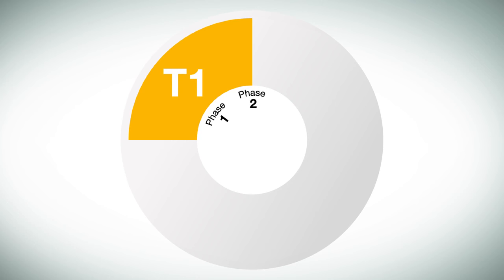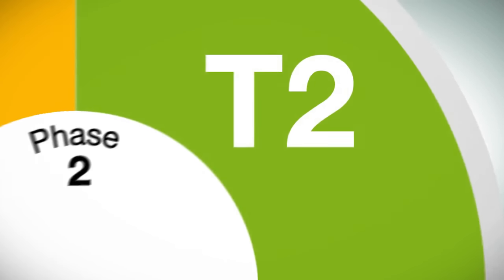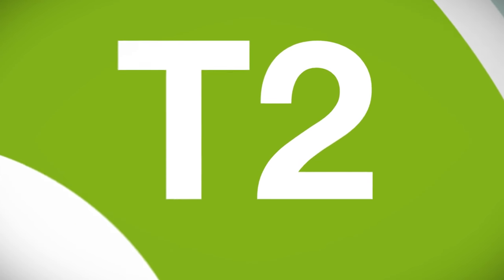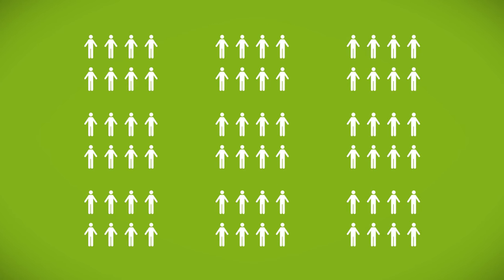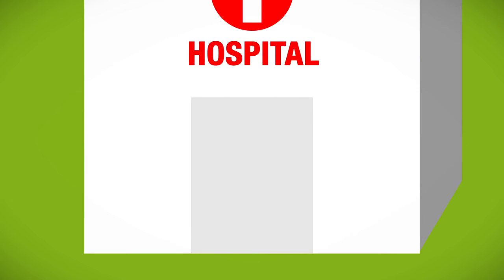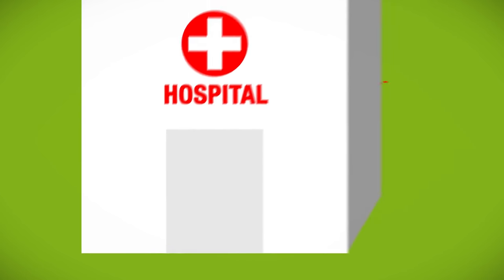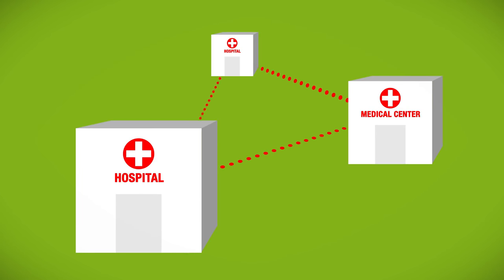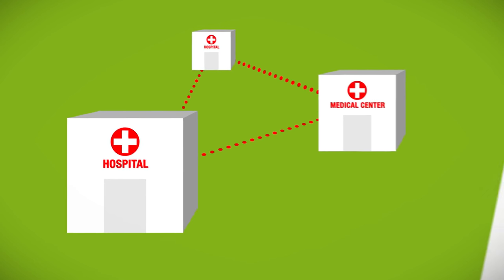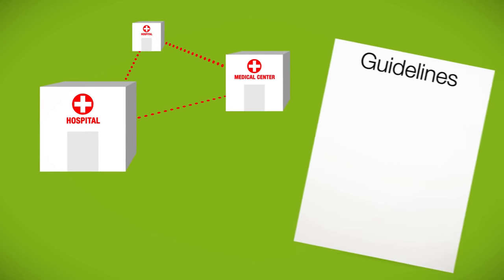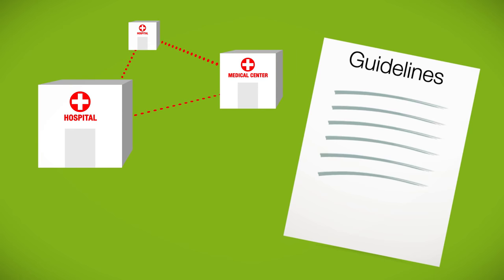To see if the drug is effective, T2 researchers give the new treatment to patients who have the disease researchers are interested in. T2 studies are bigger than T1, with hundreds of people at multiple medical centers receiving the new experimental treatment. These larger studies make up phase 2 and 3 clinical trials. The results from these studies help to establish guidelines for how to use the drug in the future.